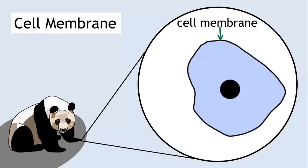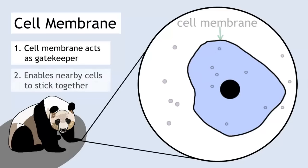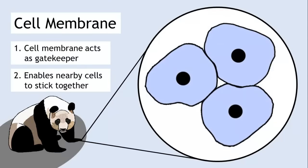The cell membrane, which is the border of the cell, acts as the gatekeeper and controls what enters and exits the cell, as well as enabling neighbouring cells to stick to one another.